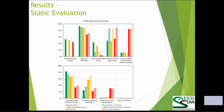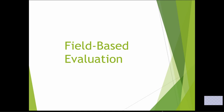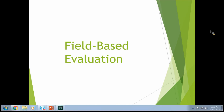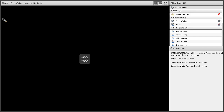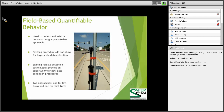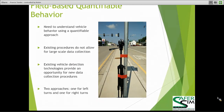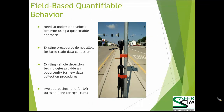We're now transitioning into the field-based evaluation. What we need to identify is ways to measure vehicle behavior in the field that allow us to gain insight in the same way that a driving simulator experiment provides. We have done research using driving simulators and flashing yellow arrows, and one of the good things about that is the insight it provides into the trajectory of vehicles.